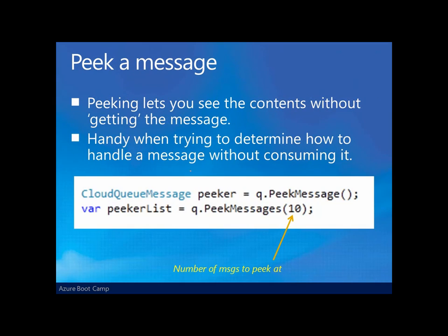One convenient thing we might want to do is to peek at a message — essentially take a look at the contents of the message without actually getting it. In other words, without saying we're working on it and thereby invoking the start of the timeout. This is handy when we're trying to determine how to handle a particular message, especially if we're doing some sort of conditionalization in our code — for example, if the message has this information, handle it one way; if it has this data, handle it another way. To peek at a message doesn't actually remove the message from the queue, nor does it start the timeout as a getMessage would. It just allows us to look at the contents without the message being consumed.